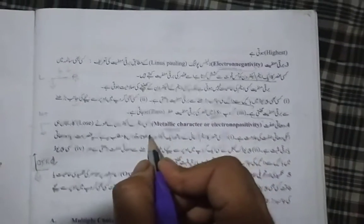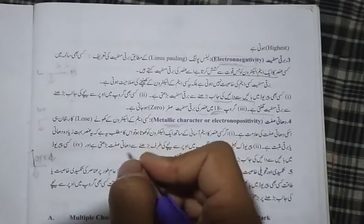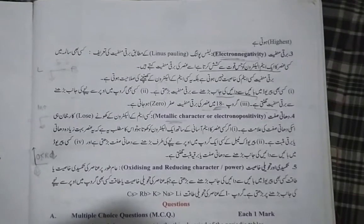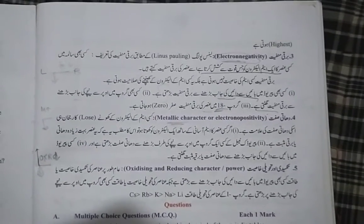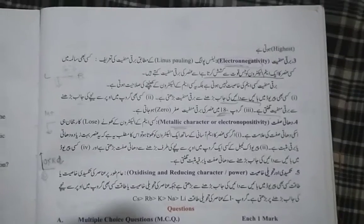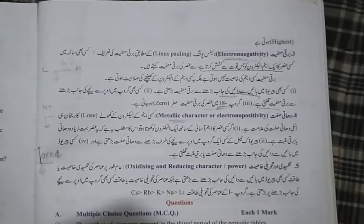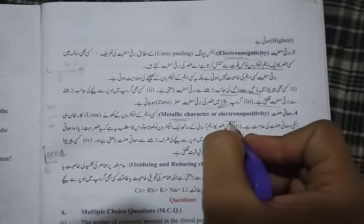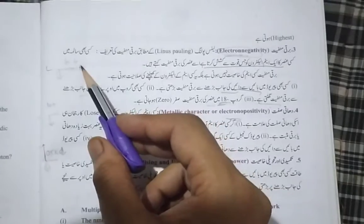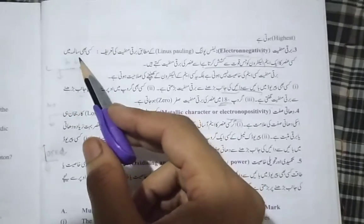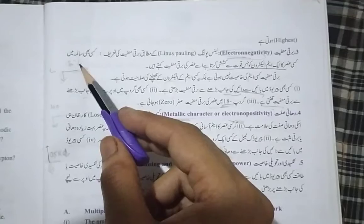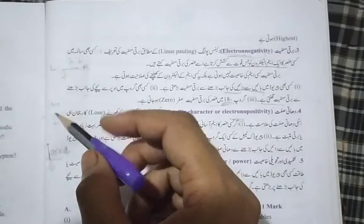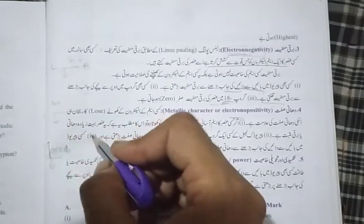What is the metallic character? The metallic character means that an element has the tendency to lose electrons. It will lose electrons easily — that is the metallic character. This is also referred to as electropositivity. The diagram for metallic character is opposite to that of electronegativity — where one decreases, the other increases.